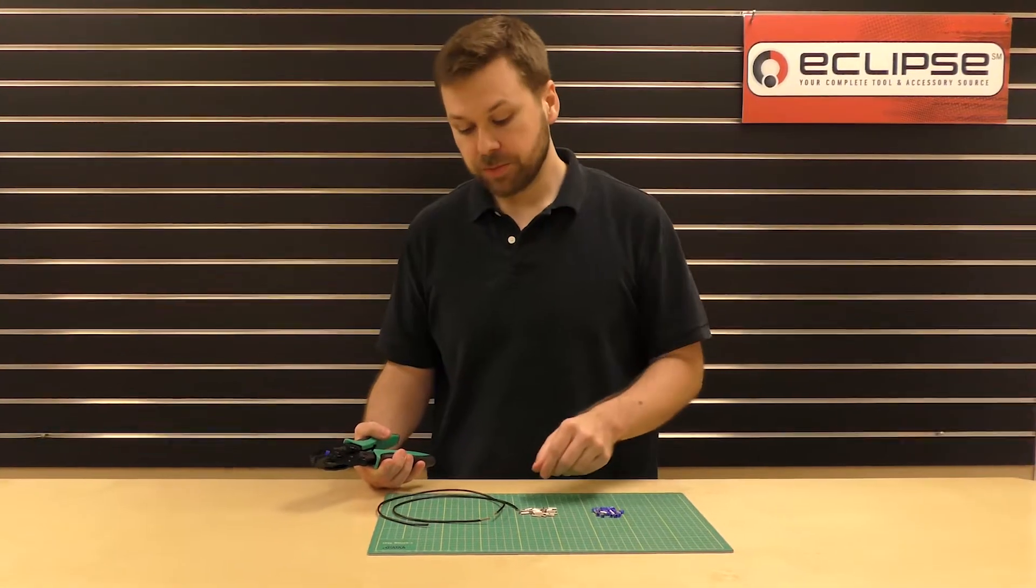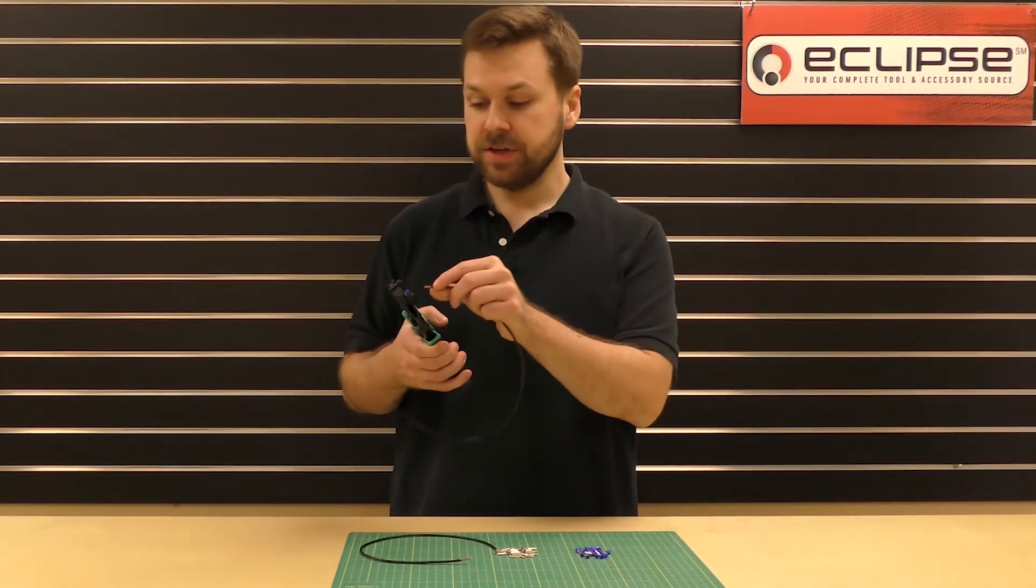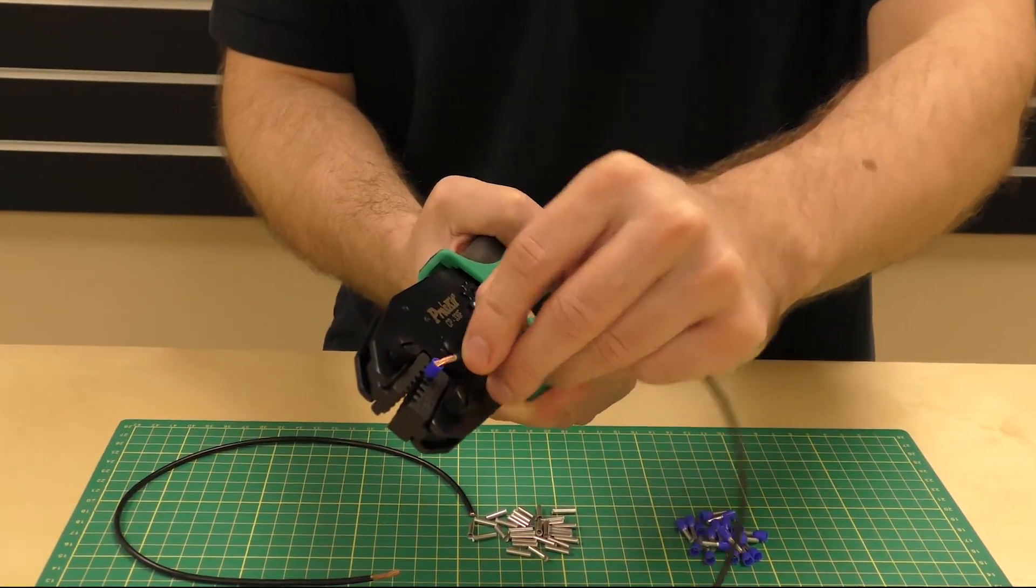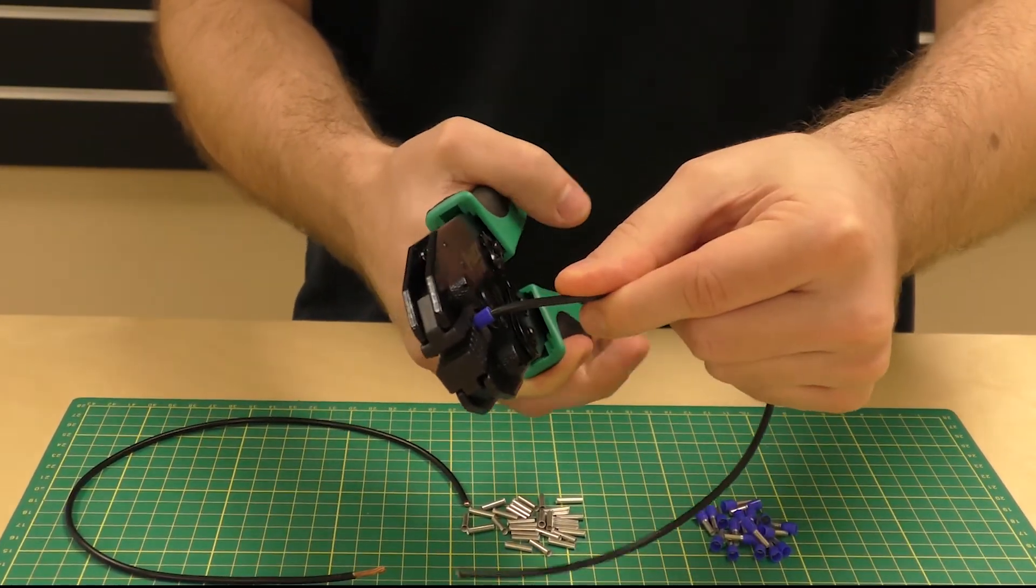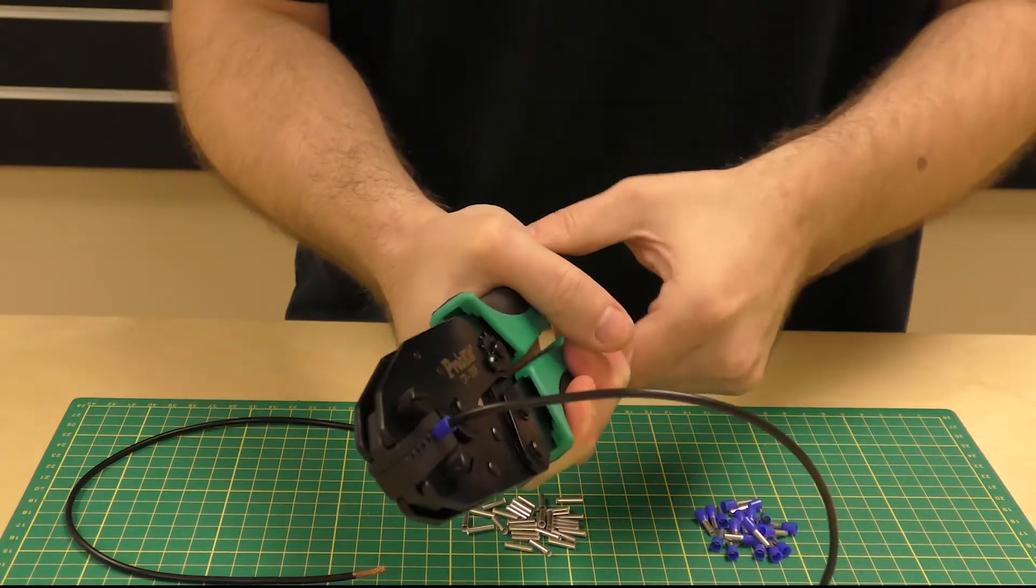Now take your pre-stripped copper wire and insert it into the wire ferrule. Squeeze the handles all the way until the crimp is complete.